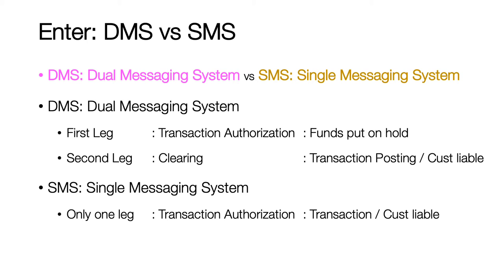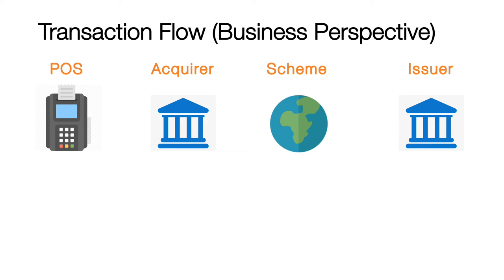There is also an alternate method called a single message system, where, as the name says, the issuer does not get a second message and can bill the customer from the first message itself. It is called single message system. For example, when the customer does a cash withdrawal, the customer has already got the funds in hand immediately, so cash withdrawals are passed as a single message system to the issuer bank. Please note that in the case of a credit card, issuing banks do usually also receive cash withdrawals in the clearing file, to be in line with the transaction process.